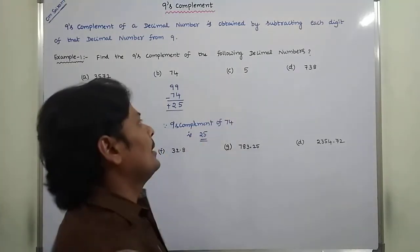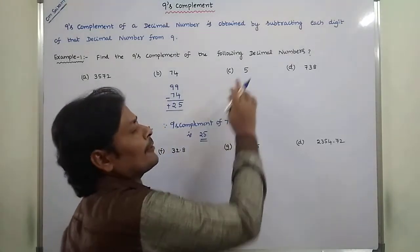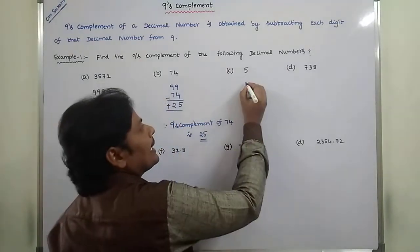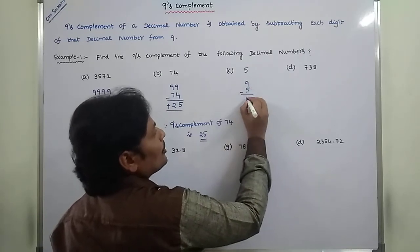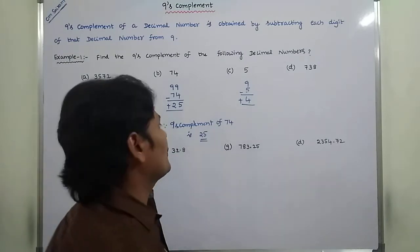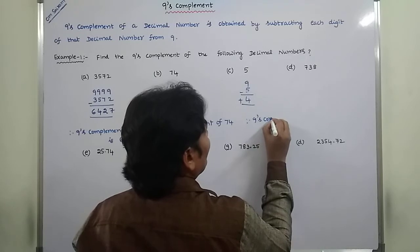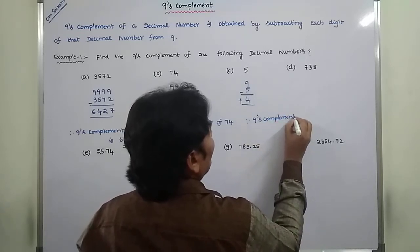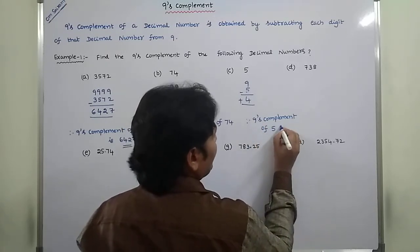Next, third problem. What is the 9's complement of 5? How many digits are there? Only a single digit, so this digit is subtracted from 9. Then 9 minus 5 is equal to 4. Therefore, the 9's complement of 5 is 4.